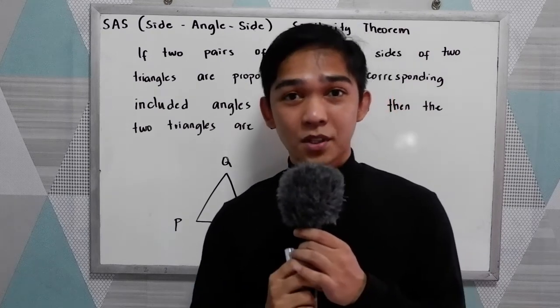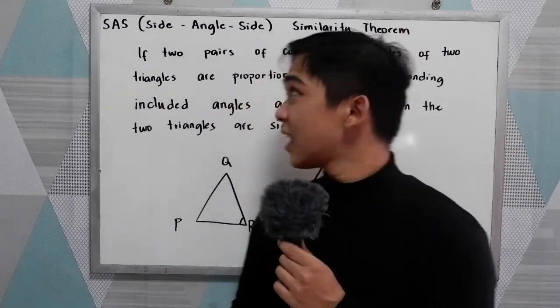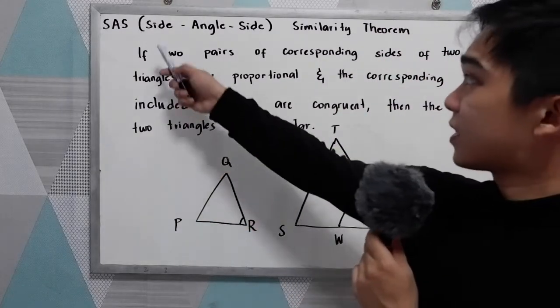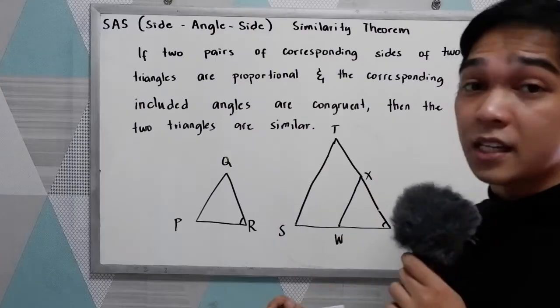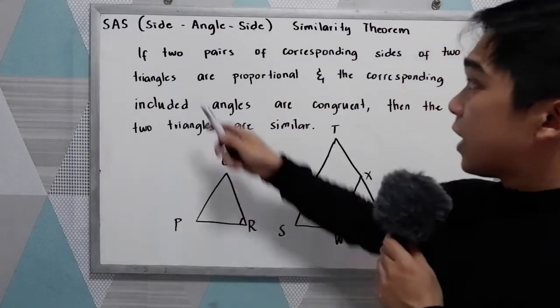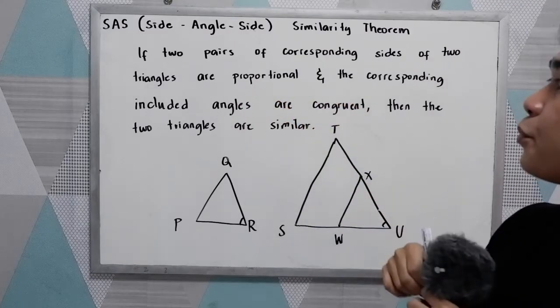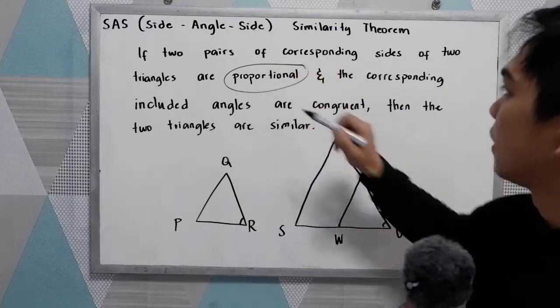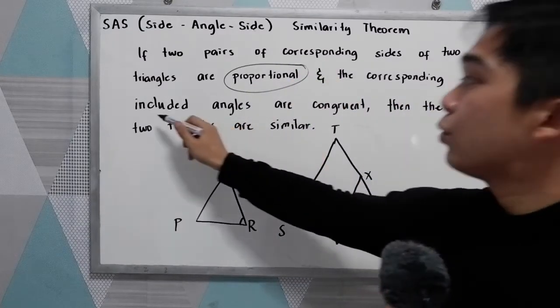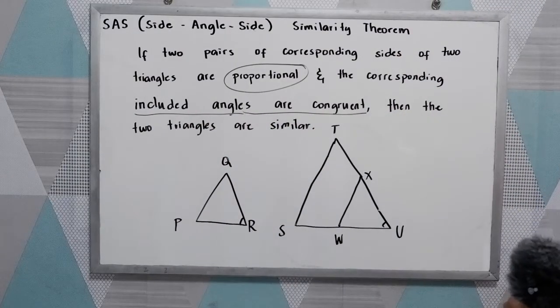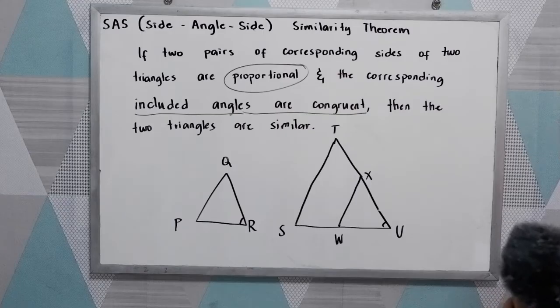Good day everyone. Today I will be discussing the SAS Similarity Theorem, or the Side-Angle-Side Similarity Theorem. If two pairs of corresponding sides of two triangles are proportional and the corresponding included angles are congruent, then the two triangles are similar. To illustrate,